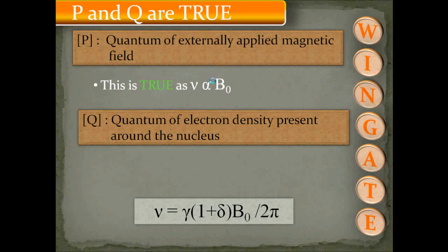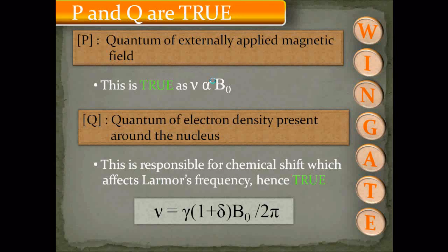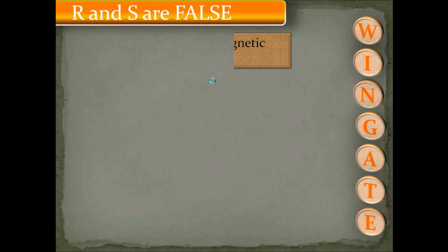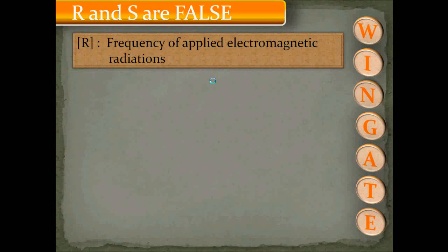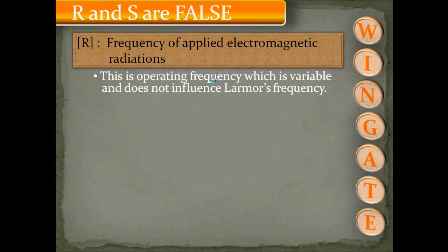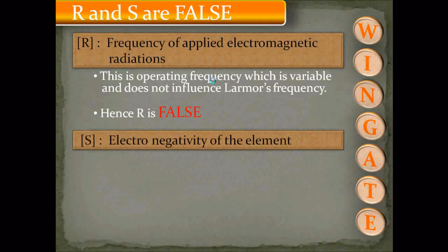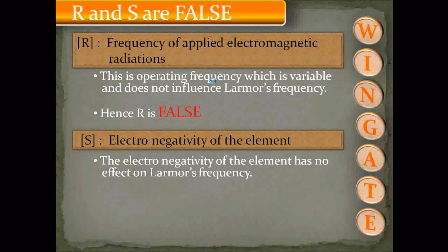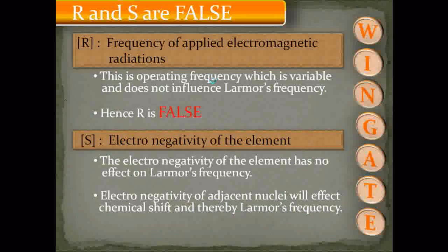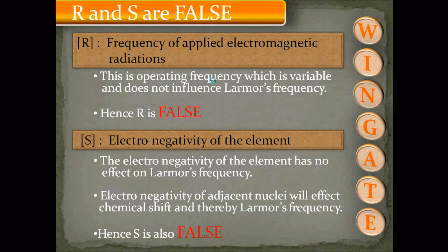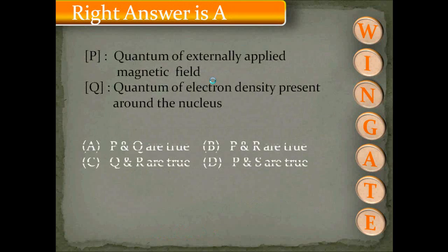Statement Q — quantum of electron density present around the nucleus — is also true, because electron density around the nucleus determines the chemical shift, which in turn influences Larmor's frequency. Statement R — frequency of the applied electromagnetic radiation — is false, as this is the operating frequency, which is variable and cannot influence Larmor's frequency. Statement S — electronegativity of the element — is also false; it is the electron density around the nucleus that affects chemical shift and thereby Larmor's frequency. Hence the correct answer is A: P and Q are true.